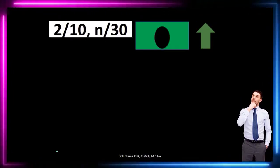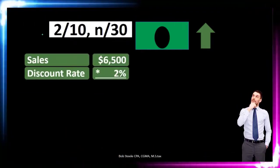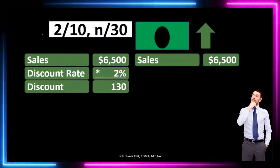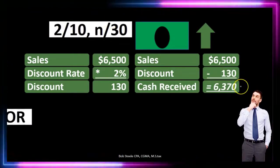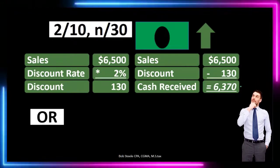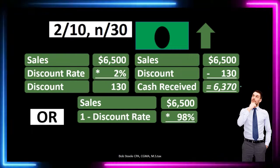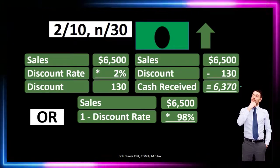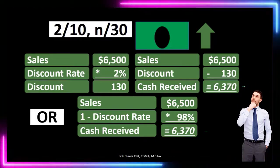Let's calculate the discount. We have a two percent discount since we paid within 10 days. The original amount is six thousand five hundred; two percent of that equals one hundred thirty — so we're not going to pay that one hundred thirty. That means the payment is six thousand five hundred minus one hundred thirty, equaling six thousand three seventy. A quicker way: six thousand five hundred times one minus two percent, or six thousand five hundred times ninety-eight percent, also gives us six thousand three seventy — the amount we will pay after the discount.